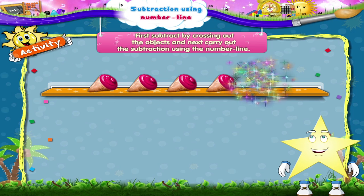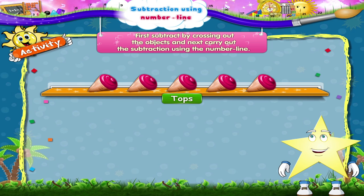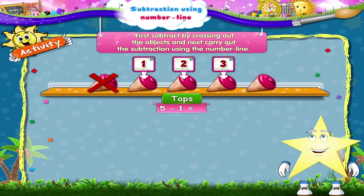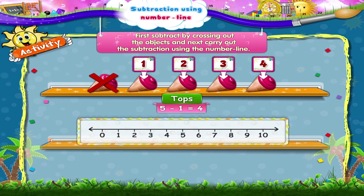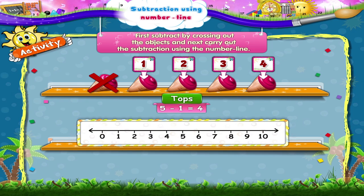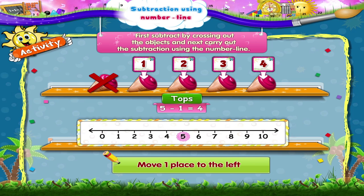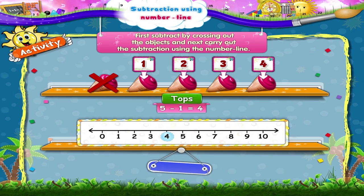Now look at the tops. One, two, three, four, five tops minus one top. That's five minus one equals one, two, three, four tops. Now using the number line, start at five, move one place to the left. We reach the number four. So five minus one equals four.